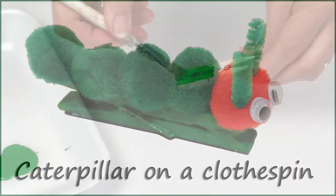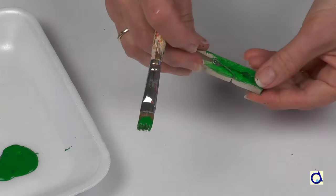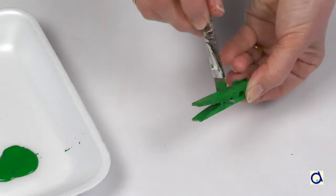Take a wooden clothespin and paint it green. The clothespin will be the support of the caterpillar. If necessary, you can put several coats of paint to hide completely the wood of the clothespin.